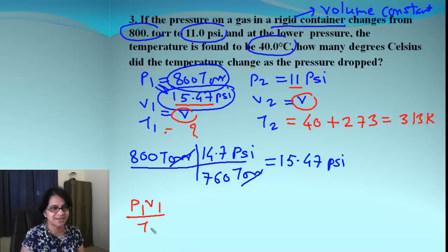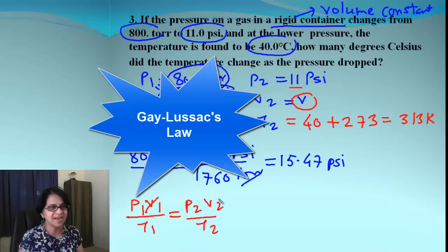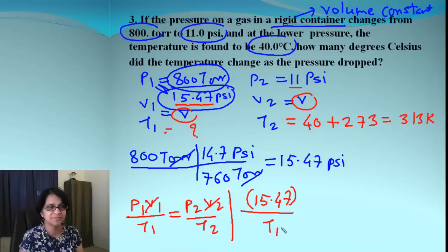It's P1V1 over T1 equals P2V2 over T2. Volume is same. So let's cancel that. And then let's plug the values. Make sure you are plugging in the new value for pressure. So it's 15.47 divided by temperature T1, which is unknown. And that is equal to 11 divided by 313 Kelvin. So when we solve for temperature T1, we end up getting the answer 440 Kelvin.